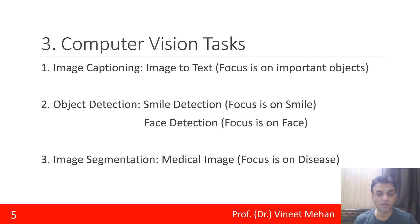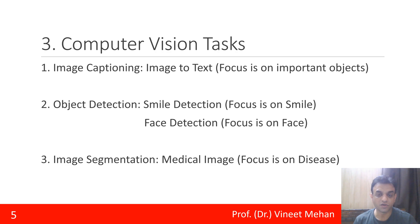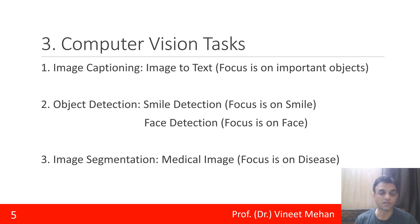In the manufacturing industry, if we are looking for a particular boundary of an object, the focus will be on that boundary. The third application area is image segmentation — for example, in a medical image, we give more focus on the disease area. These are the various computer vision areas where attention model can be applied.